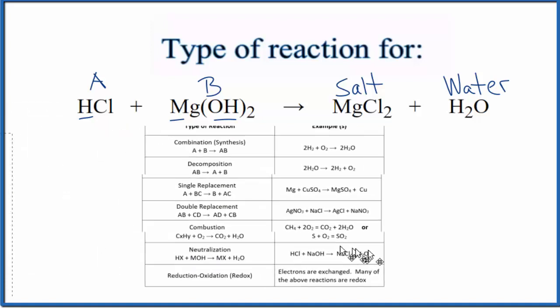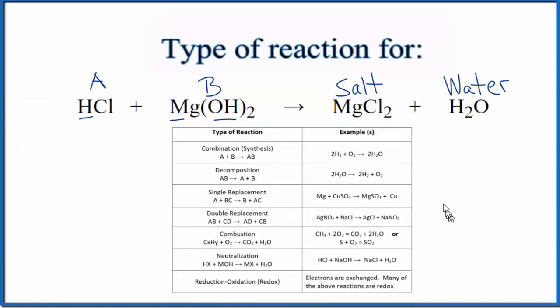If we put a table up here of general common types of reactions, we'll see our neutralization reaction. It's right here. You have H and then something, so HCl for instance. And then you have MOH. The M stands for a metal, like magnesium, and then the hydroxide. And you get your salt and your water. That's neutralization.